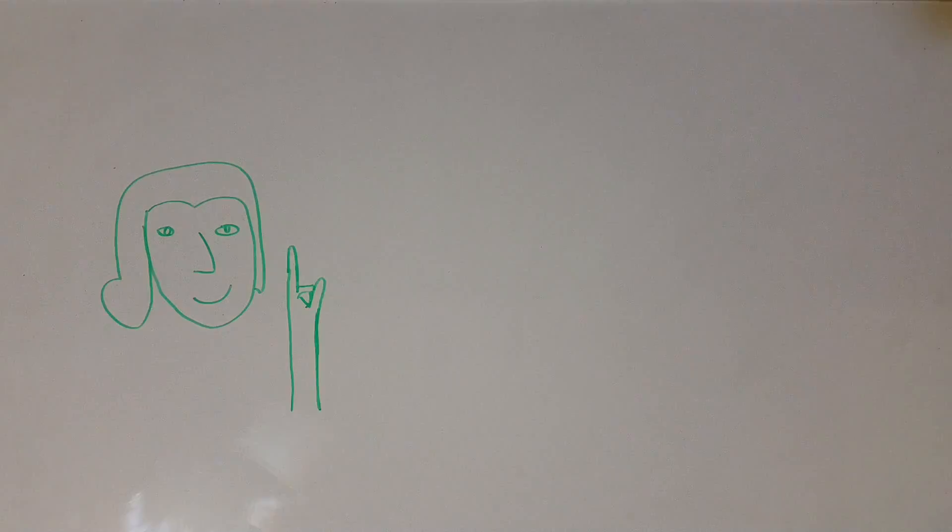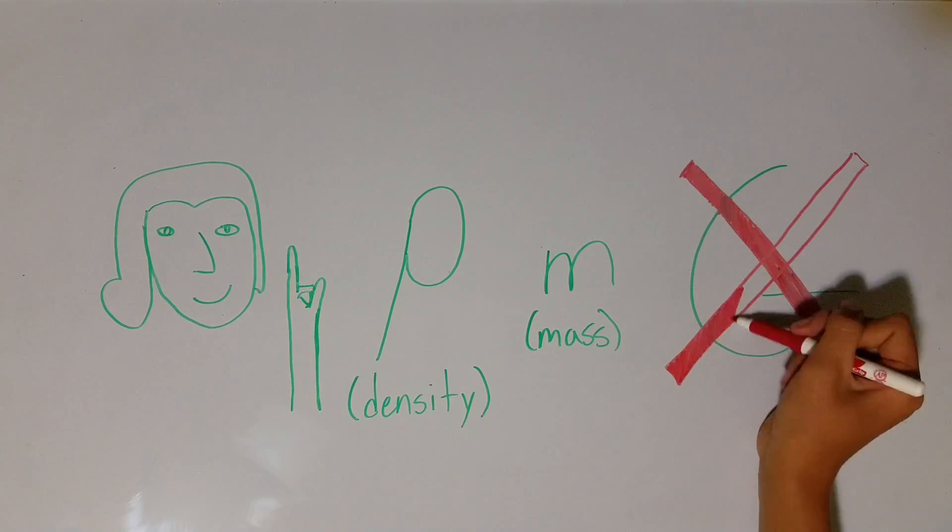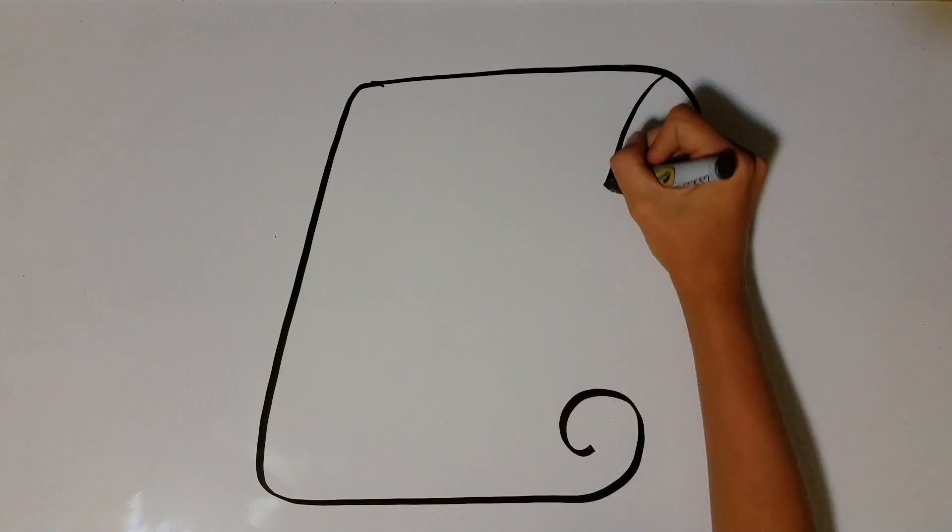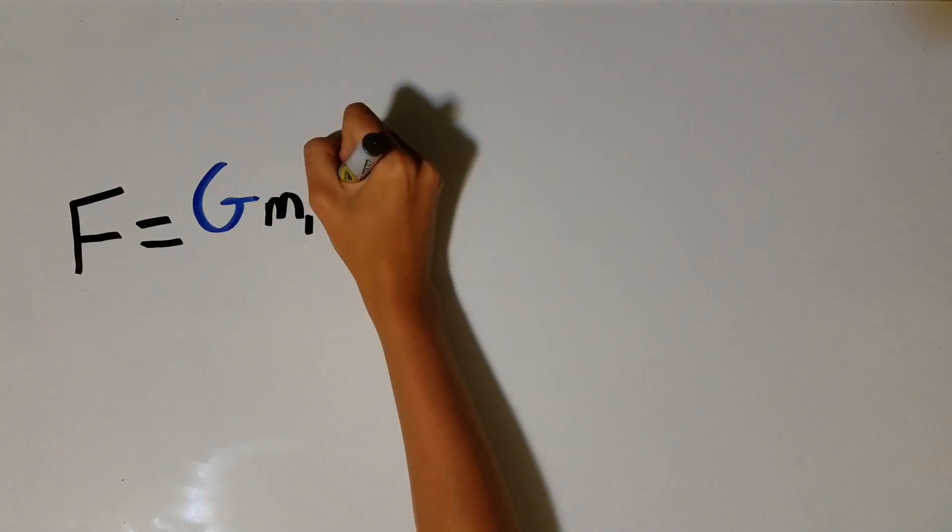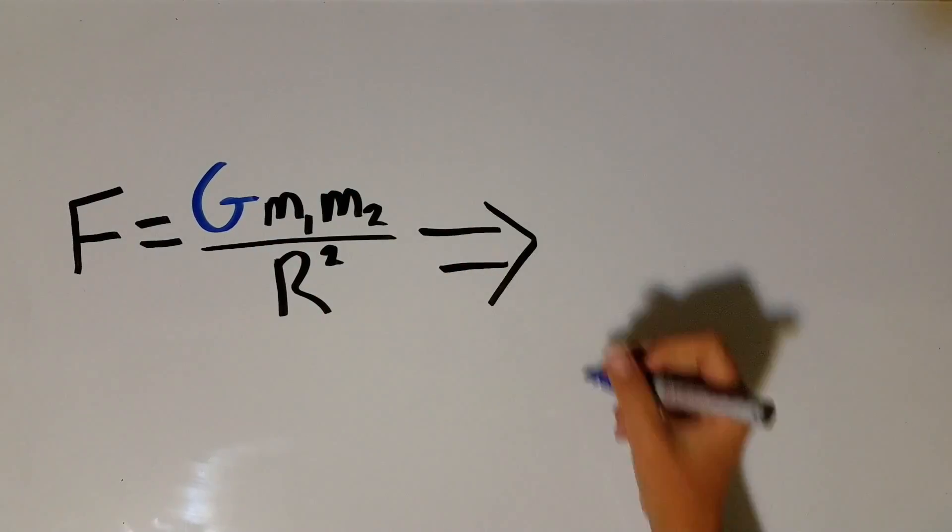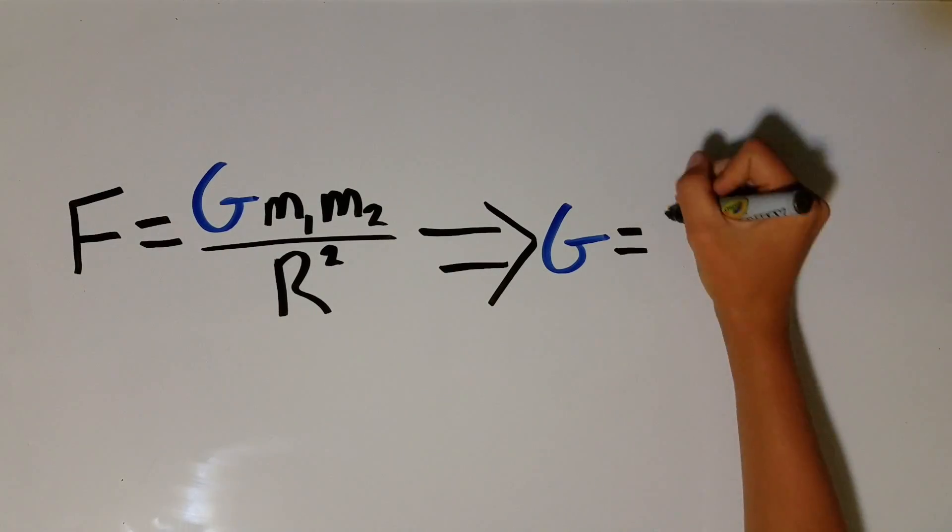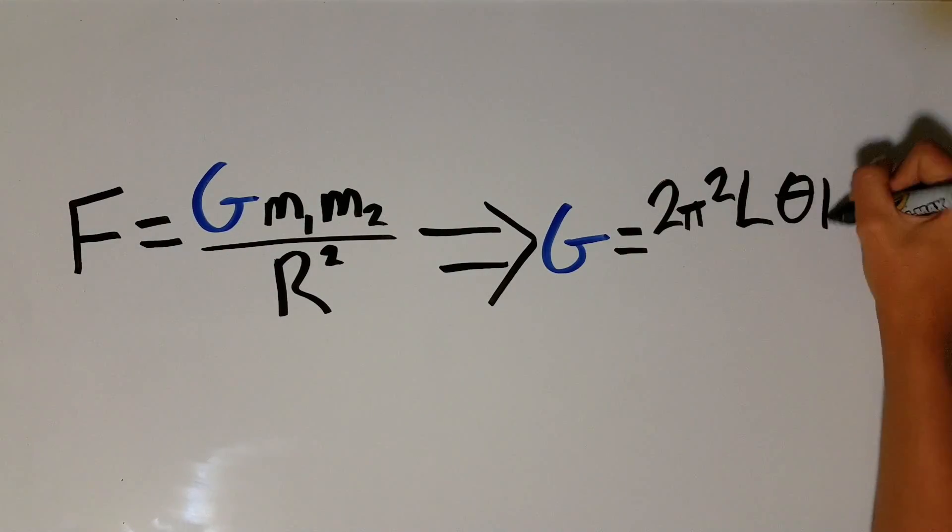Ironically, he found the density and mass of the Earth, but never recorded G. The value was not actually documented until 1874. As it turns out, F equals G M1 M2 over R squared can be rewritten as G equals 2 pi squared L theta R squared divided by T squared M.